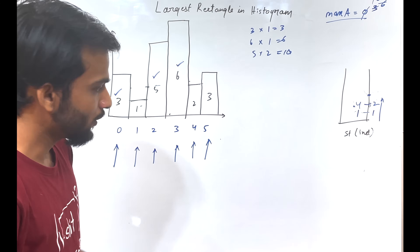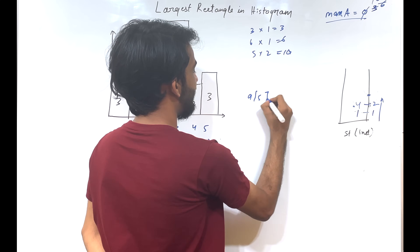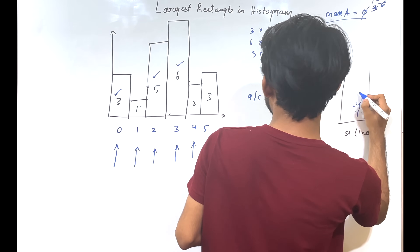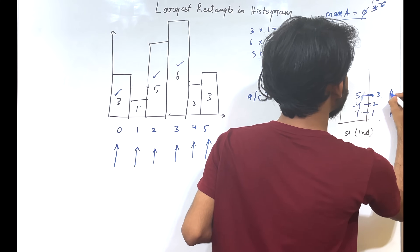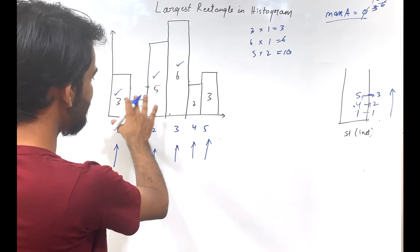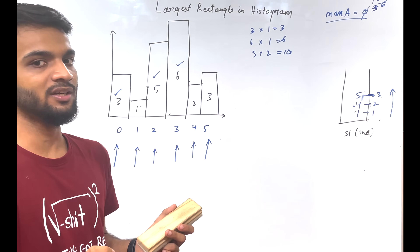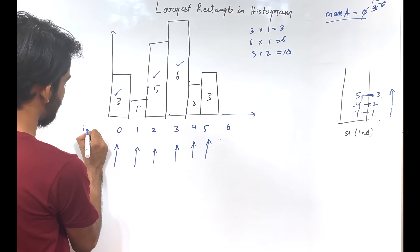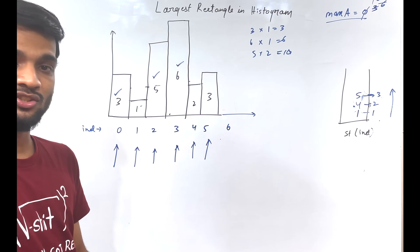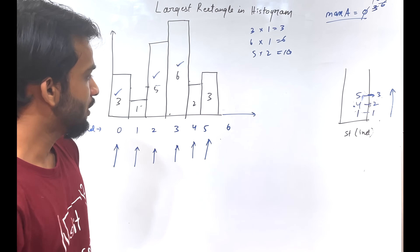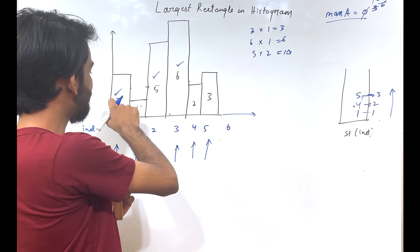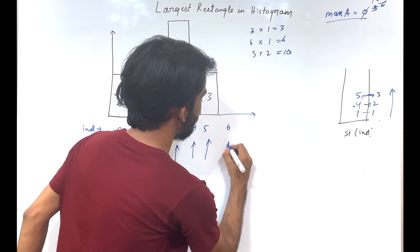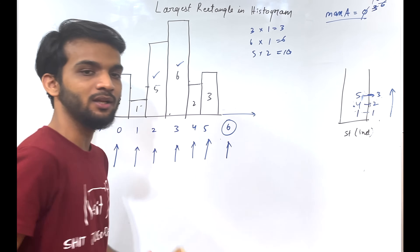Moving to index 5 (value 3): value 2 at index 4 is not greater than 3, so we maintain the linearly increasing fashion and push index 5 (value 3) onto the stack. However, some blocks still haven't been computed for their area. So we do one more iteration, going up to index 6 (one past the end of the histogram at index 5), since if indexes go from 0 to 5, we iterate till index 6 to handle remaining stack elements.